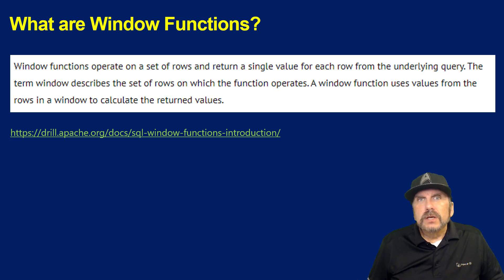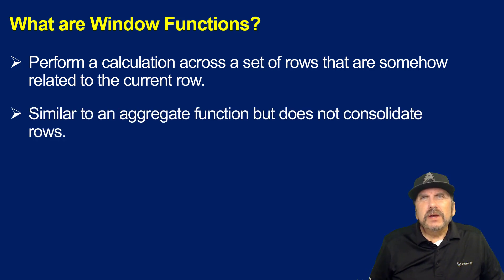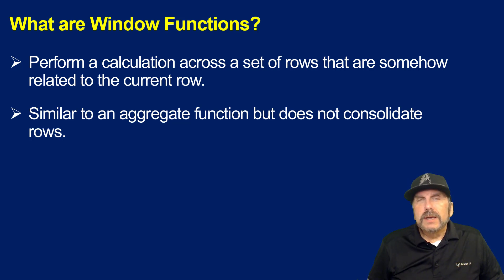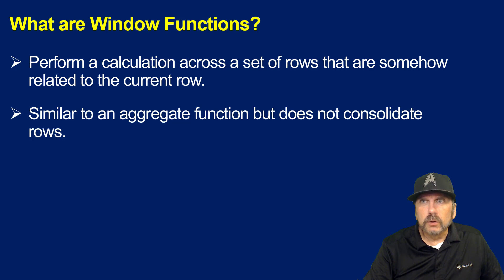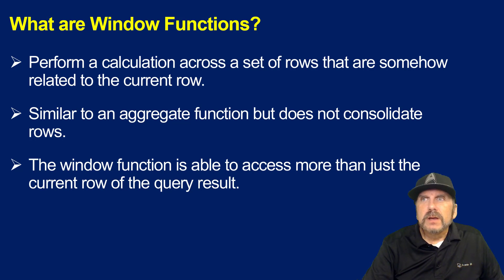That's the power of window functions. They are an extension to the original SQL standard to allow greater functionality than had previously been possible. They perform a calculation across a set of rows that are somehow related to the current row, and they are similar to aggregate functions, with the exception that aggregate functions consolidate rows. You may have 20 rows in an aggregate function query where you're summarizing total sales and get only one row back based on the grouping. But that's not how window functions work — although they do have a grouping operator called a partition, they're different in that they don't consolidate the result rows back. The window function is able to access more than just the current row of the query result.